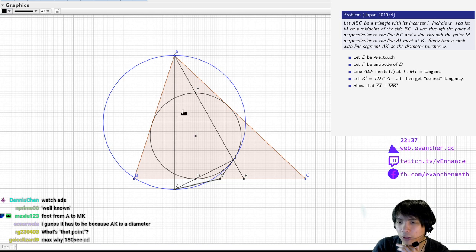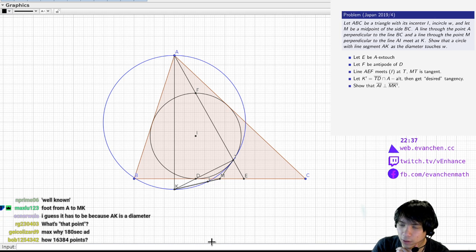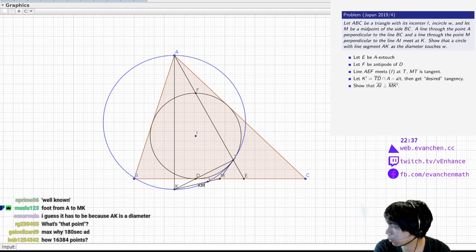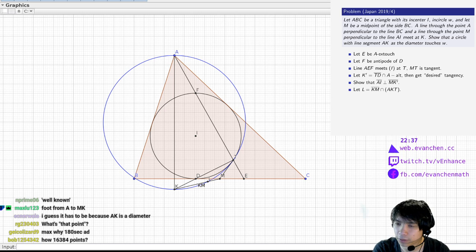Yeah, so AK is a diameter, but I'm trying to see why AKLM collinear. Or equivalently, why AIL collinear in this picture. So is LK equal to LT? Is that what's up? Let L be the intersection of KM with the blue circle.